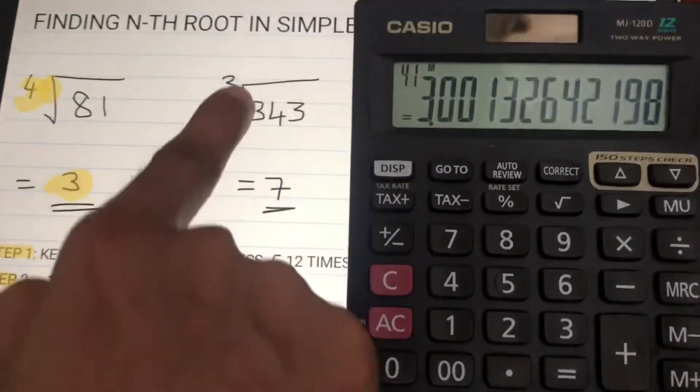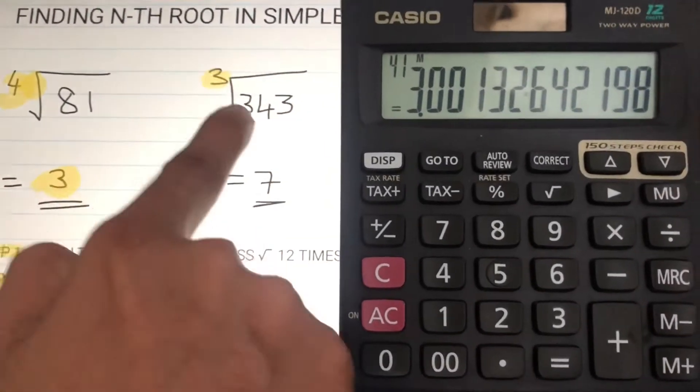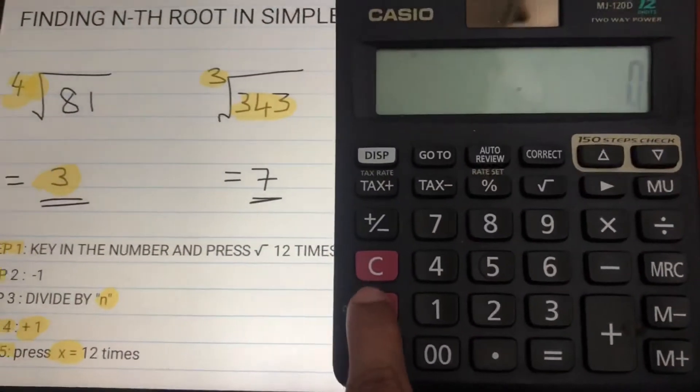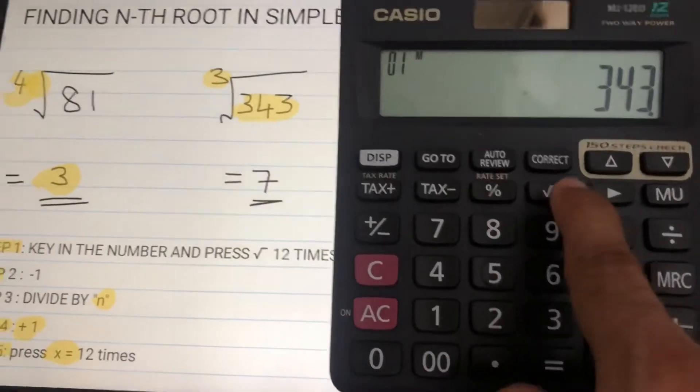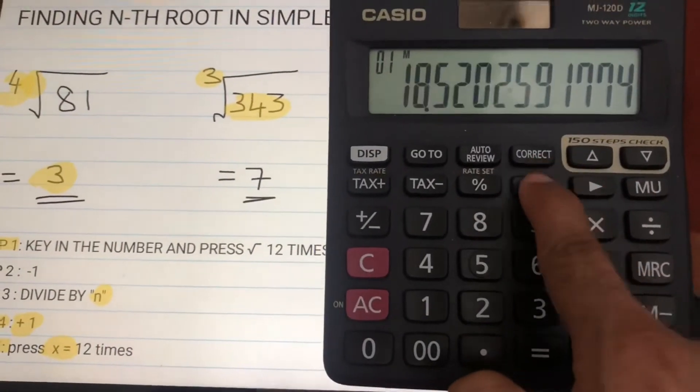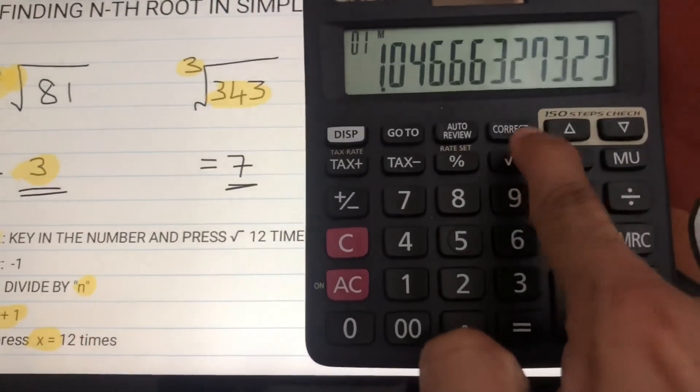You can do it for anything. Check this one. Now I'll just quickly do this: cube root of 343. So first, press the number 343. Next is square root 12 times: 1, 2, 3, 4, 5, 6, 7, 8, 9, 10, 11, 12.